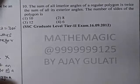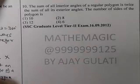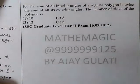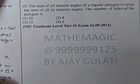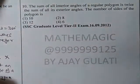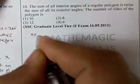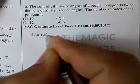The sum of all the interior angles of our regular polygon is twice the sum of all its exterior angles. The number of sides of the polygon is exactly the same as in question number 9.